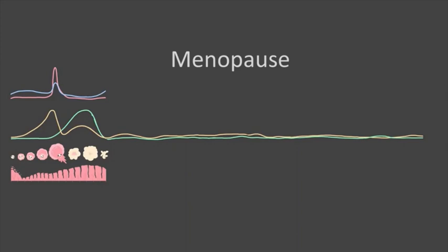And the ovaries really slow down making hormones. And you can see the estrogen and progesterone levels are now both very constant and on the low side. And sometimes we get symptoms because of that low level of those hormones, and I'm sure we'll get into talking about some of those symptoms.